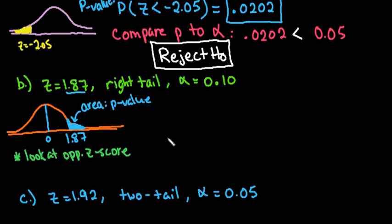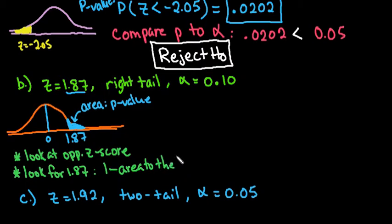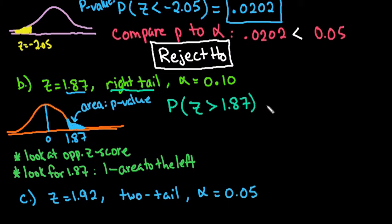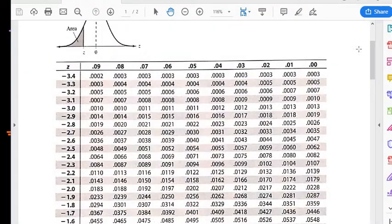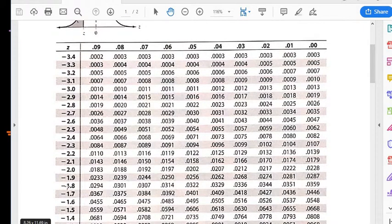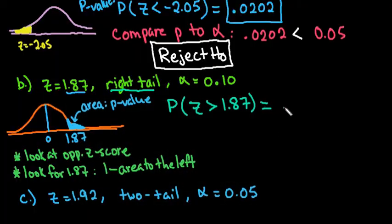Because the table typically gives the area to the left, I would look for negative 1.87. The other option is to look for 1.87 and then do 1 minus the area to the left. For a right-tail test, the p-value is P(z > 1.87). If I go to negative 1.8 and across to 7, I get 0.0307 — and that's the answer.